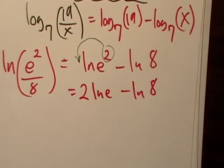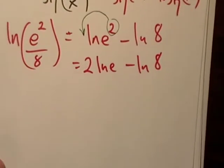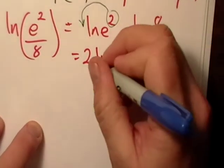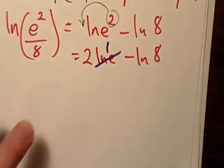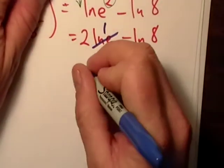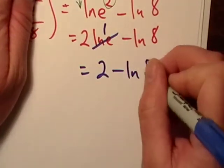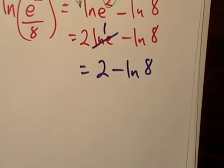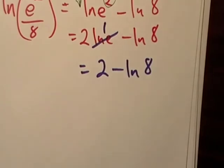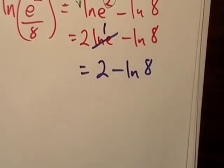If you think about it, E raised to what power gives you E? E raised to the 1 gives you E. So we actually can simplify this a little bit further. And, bada bing, bada boom, you got 2 minus natural log of 8.